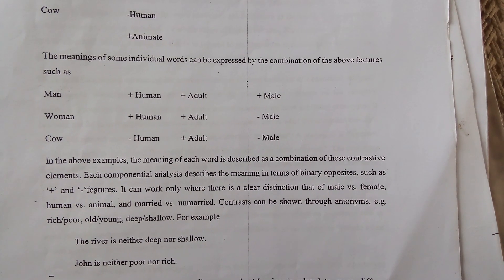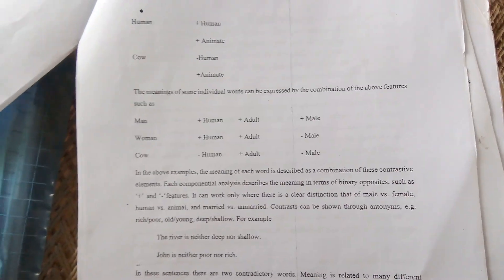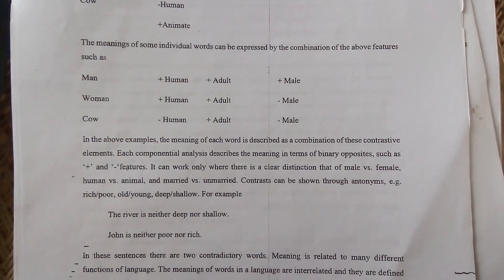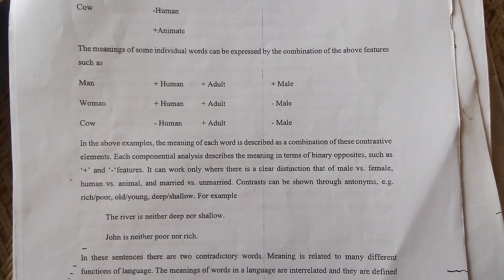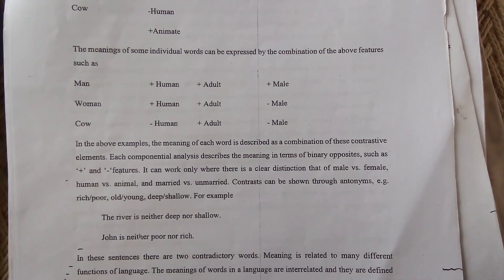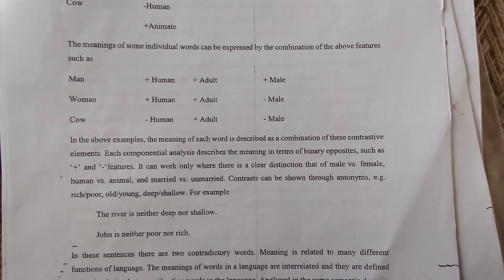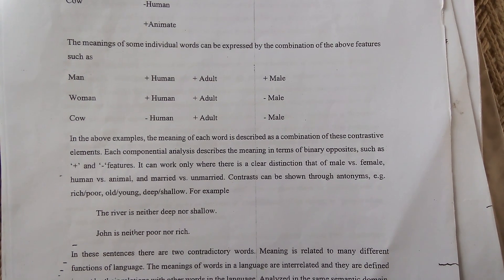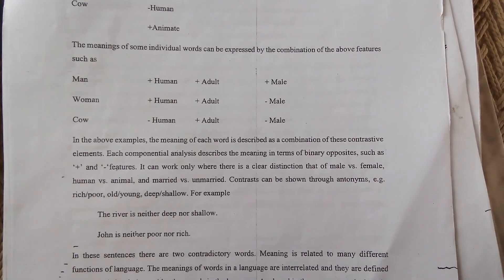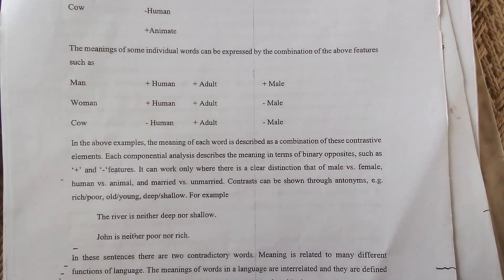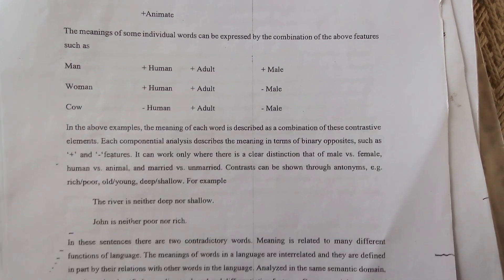This binary system can work only where there is a clear distinction — such as male versus female, human versus animal, and married versus unmarried. Contrasts can be shown through antonyms, for example: rich/poor, old/young, deep/shallow.